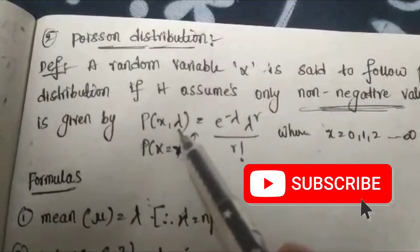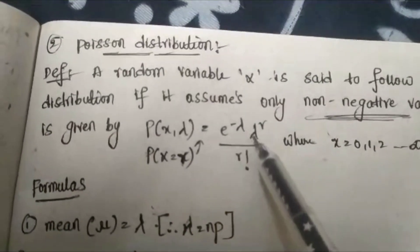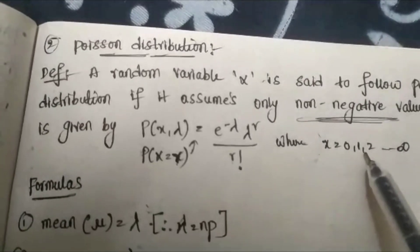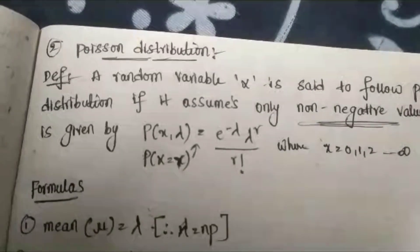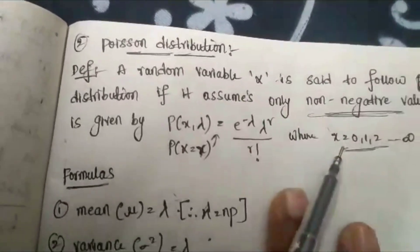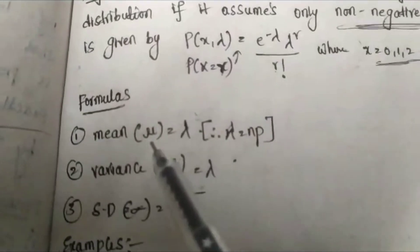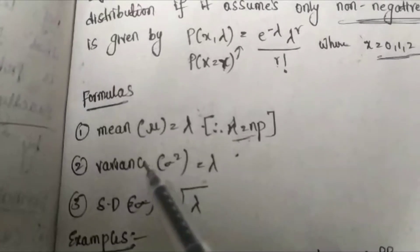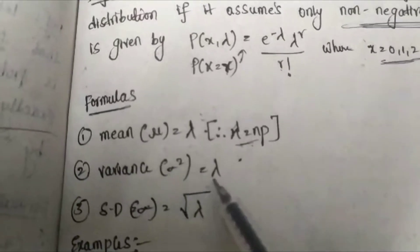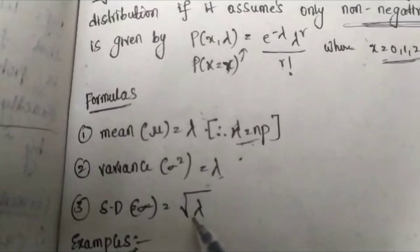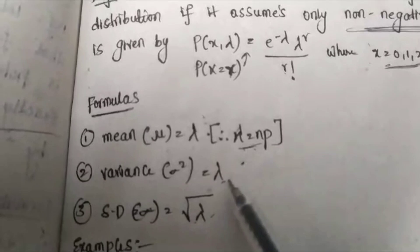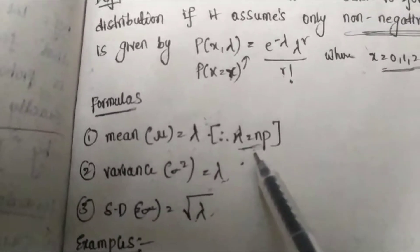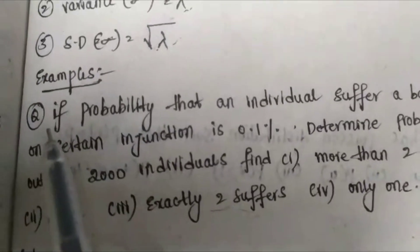P(x, λ) = e^(−λ) · λ^r / r!, where x = 0, 1, 2, ... The formulas in Poisson distribution to be learned are: mean μ = λ, where λ = np; variance = λ; and standard deviation = √λ. So λ equals np for variance and standard deviation as well.